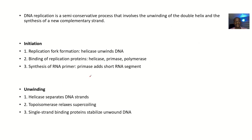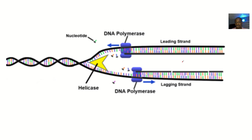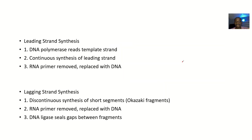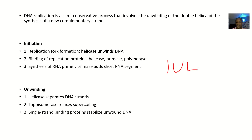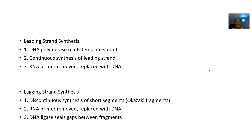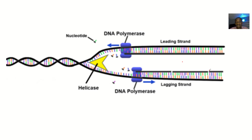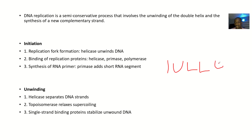So what are the processes involved? We have initiation, we have unwinding — let's start developing mnemonics already: I, U. That's initiation and unwinding. Then we have the leading strand synthesis, then the lagging strand synthesis — that's L, L. Lead comes before lag. Then we have elongation, then termination — that's E, T. So these are mnemonics for remembering all the steps involved in DNA replication.